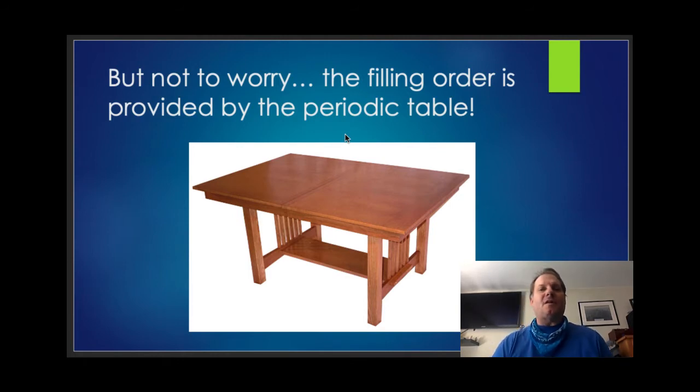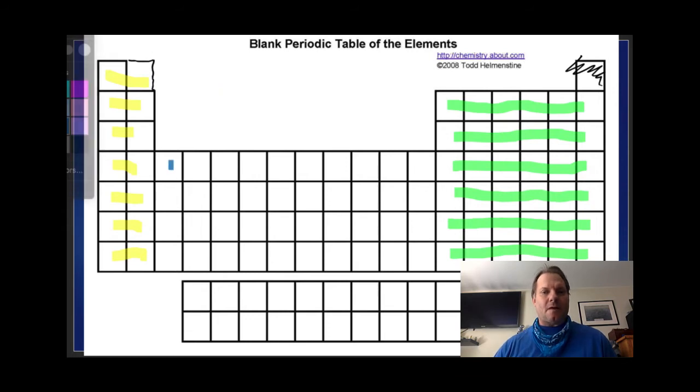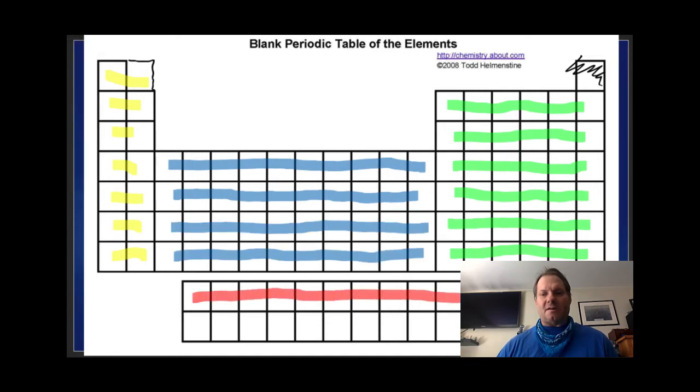But not to worry. The filling order is actually provided by the periodic table. So, as we look at this periodic table, there's a couple things we need to know. When viewing these periodic tables in this context, it's helpful to think of helium actually being that square right there. Pretend it's not over there. Now, when we look at this periodic table, we have different regions of the periodic table. We have this block, which we call the S block. We have this block here, which is called the P block. We have this block here, which is the D block. And we have this block here, which is called the F block.